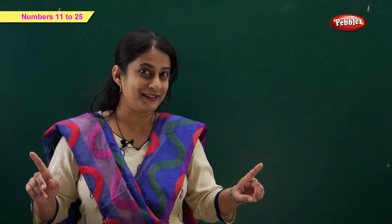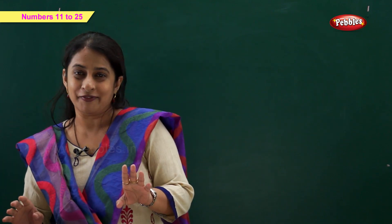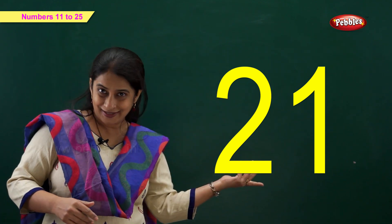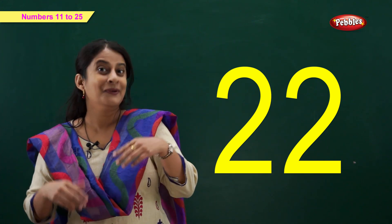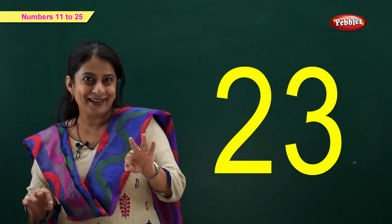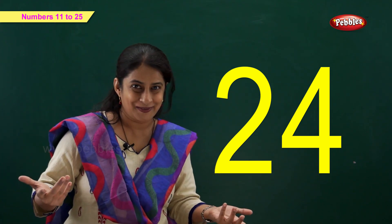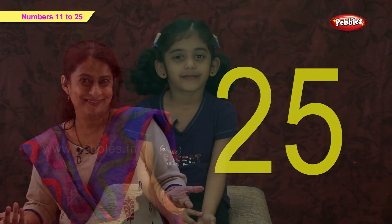Hey friends, it's time to learn more numbers — 21 to 25! Let's begin with number 21: 2 and 1 is 21. 2 and 2 is 22. 2 and 3 is 23. 2 and 4 is 24. 2 and 5 is 25. 21, 22, 23, 24, 25!